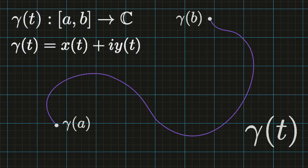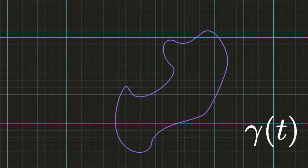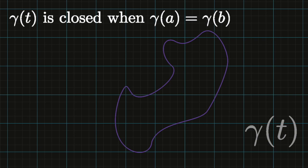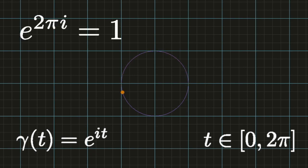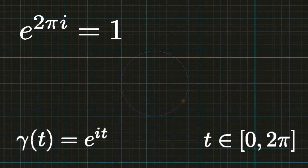A parameterized curve in the plane is a mapping from a closed interval ab to the plane. If the endpoints of the curve coincide, we say that it is closed. For example, consider the parameterization of the circle e to the i t for t in the closed interval from 0 to 2 pi. It's easy to see that this is a closed curve since e to the 2 pi i equals 1.